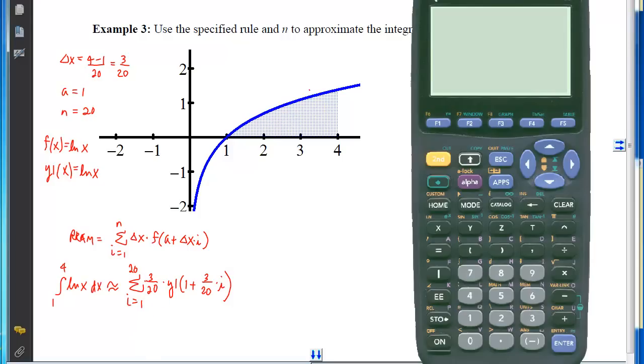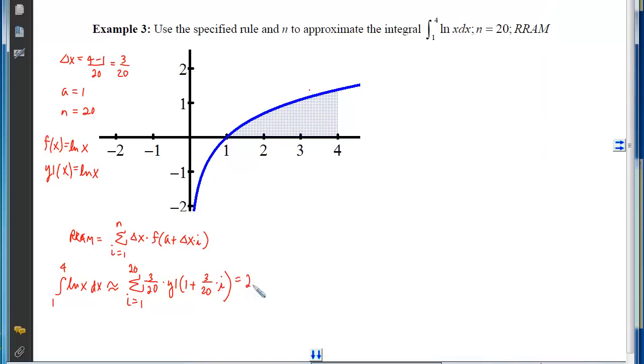So if we look at the calculator here, we can see that I have put natural log of x into y1, and we can see on the home screen that we have done the sum of our delta x times y1 of our a, plus delta x times that index letter i. We've told the calculator that the index is i, and then we've told the calculator that i will go from 1 to 20. Close off the summation command, do diamond enter, and you'll see that our approximation is 2.648. And we're done.